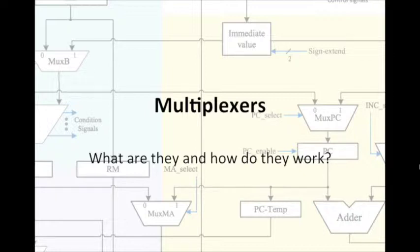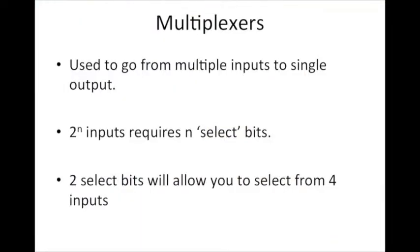So multiplexers are used when you're going from multiple inputs to a single output. You can often find multiplexers in the circuitry of CPUs and other complex chips when you're getting information from multiple sources but you only want to use one of them.